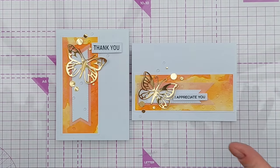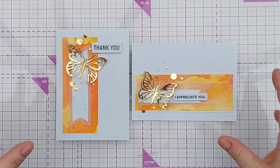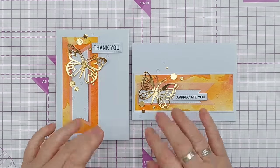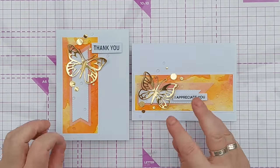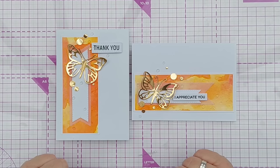So instead of having one big orange panel we've got two smaller orange panels with some white space to give somewhere for the eye to rest so that that bright bold colour isn't overwhelming.